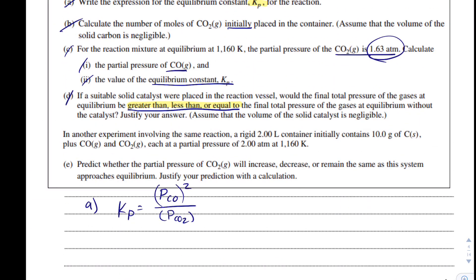Now, last question. It says, in another experiment involving the same reaction, a rigid 2-liter container initially contains 10 grams of carbon plus CO and CO2 each at a partial pressure of 2 atmospheres at 1,160 Kelvin. Predict whether the partial pressure of CO2 will increase, decrease, or remain the same. So again, we're going to need to pick one of those. As this system approaches equilibrium, justify your prediction with a calculation.